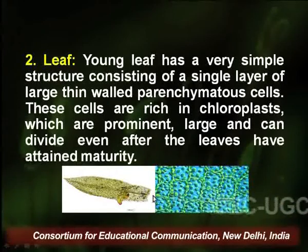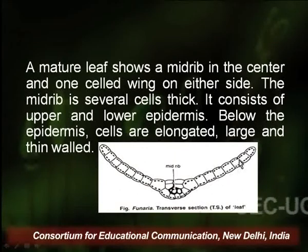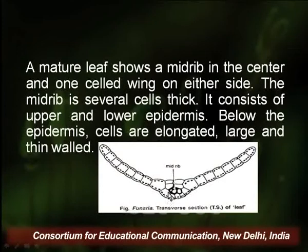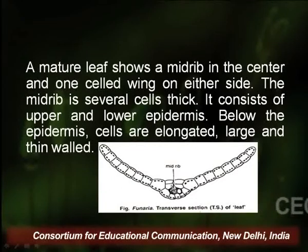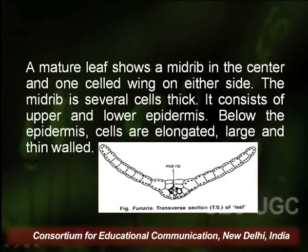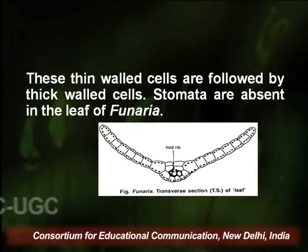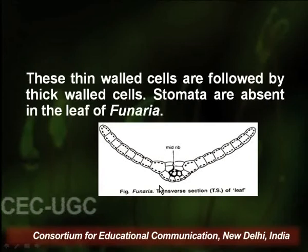A mature leaf shows a midrib in the center with one cell-thick wings on either side. The midrib is several cells thick, consisting of upper and lower epidermis. Below the epidermis are elongated large thin-walled cells, and in the center of the midrib are conducting cells. These thin-walled cells are followed by thick-walled cells.